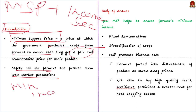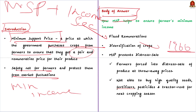In the body of the answer, we shall see how MSP helps secure a minimum income for farmers and rescue them from a low income trap. Firstly, fixed remuneration — farmers are financially secured against market uncertainty. Secondly, diversification of crops — MSP was announced by the Government of India for the first time in 1966-67 for wheat and has now been extended to over 25 crops, encouraging farmers to grow diverse crops to maximize income.